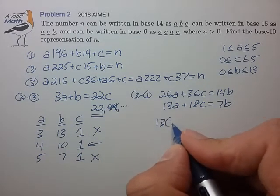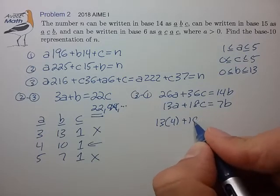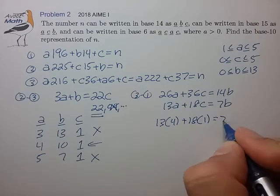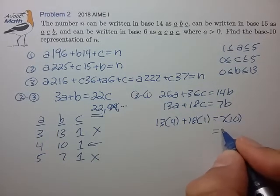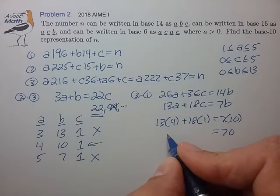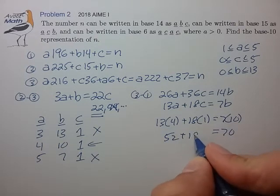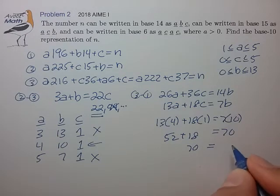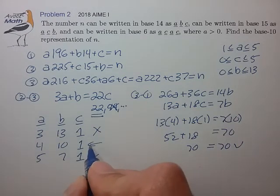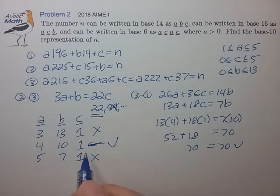Let's check if that's in fact true. Plug this in: 13 times 4 plus 18 times 1, this is 52 plus 18 equals 70. That checks out, so that validates that this is in fact the correct solution.